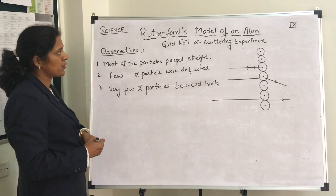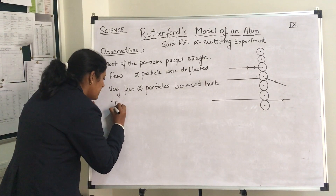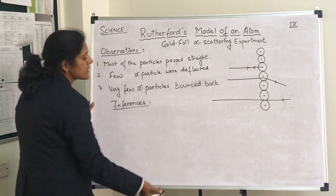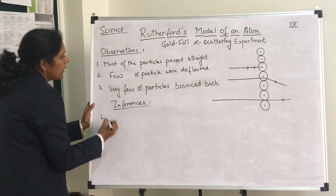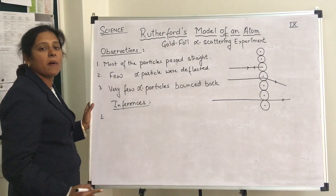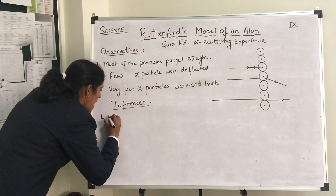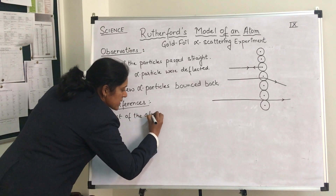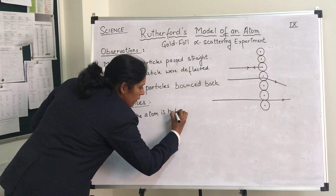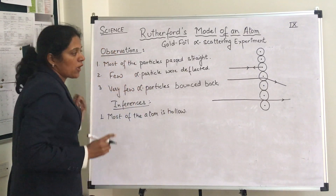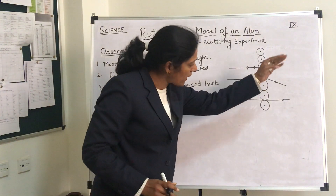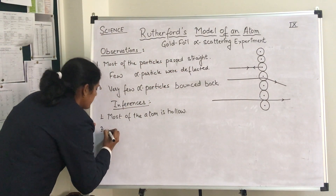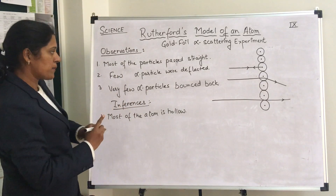On the basis of these observations he gave three inferences — basically the three results drawn from these observations. Number one: as most of the alpha particles pass straight through the foil, that means most of the atom is hollow. There are a lot of empty spaces in the atom, and that is why the alpha particles could pass straight through it.